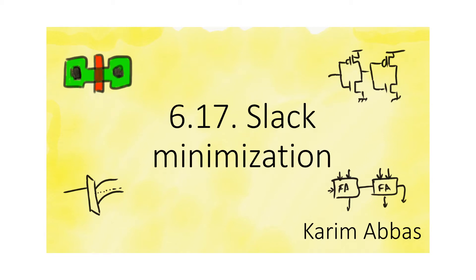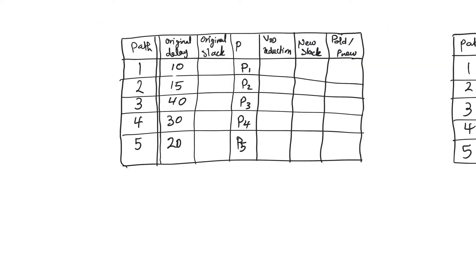We have to discuss slack in more detail because we have to understand what positive slack actually means. This table lists the delays of five combinational paths from path 1 to path 5. Path 3 is the critical path — it has the longest combinational delay and will define the operating frequency of the circuit. We assume Tsetup and Tcq are equal to zero, and we will calculate the amount of slack in each path.